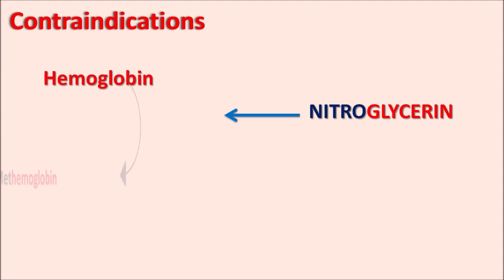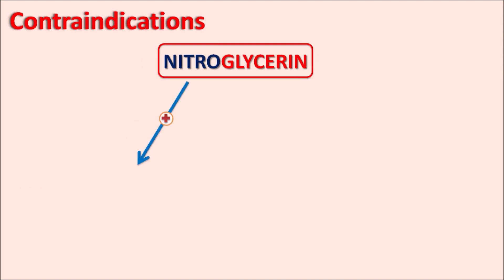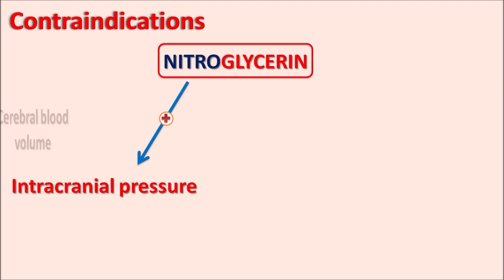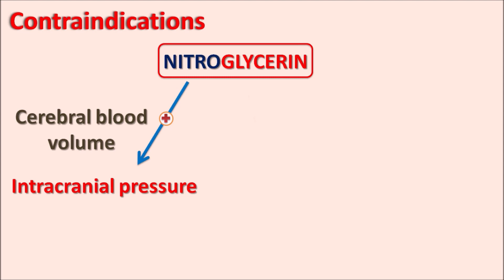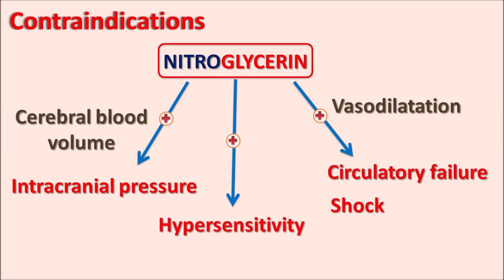Similarly, nitroglycerin can also produce the oxidation of hemoglobin to produce methemoglobin, and methemoglobin is not a good carrier for oxygen. Because of this, nitroglycerin can reduce the oxygen-carrying capacity of hemoglobin, thereby it can precipitate anemia in the patients. So if a patient already has severe anemia, nitroglycerin should be contraindicated because of increased formation of methemoglobin. Similarly, nitroglycerin is contraindicated in patients who have raised intracranial pressure, because this drug increases intracranial pressure due to increased cerebral blood volume. This drug is also contraindicated in patients who have circulatory failure or shock conditions, because it produces vasodilatation which further increases circulatory failure and collapse. Nitroglycerin is also contraindicated in patients who develop hypersensitivity towards this drug.